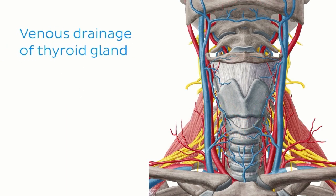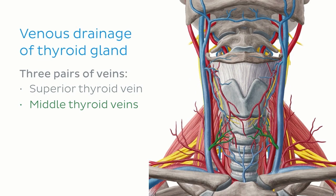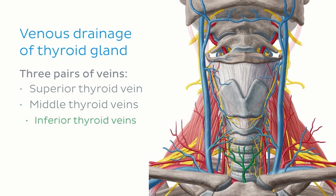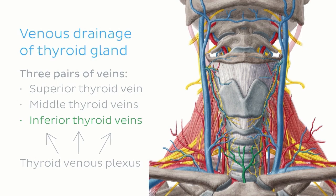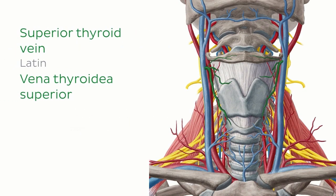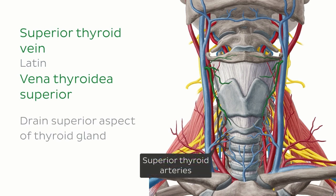Draining the thyroid gland, we have three pairs of veins: the superior, the middle, and the inferior thyroid veins. All these veins emerge from a thyroid venous plexus within the gland. The superior thyroid veins, now highlighted in green, drain the superior aspect of the thyroid gland and travel very near the superior thyroid arteries.